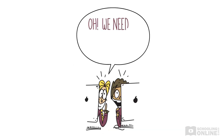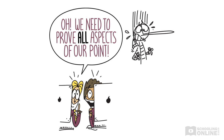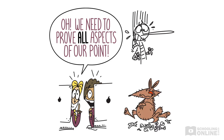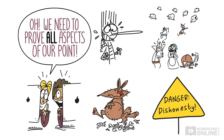Did you notice how every example proved a different aspect of our point? We didn't have three different techniques just to show that the boy was eaten and suffered a consequence. Instead, we had one example to show that he was lying, a second to show his personal consequences, and a third to show the consequences of lying for the community. All of these examples combined to prove our point about the dangers of dishonesty.